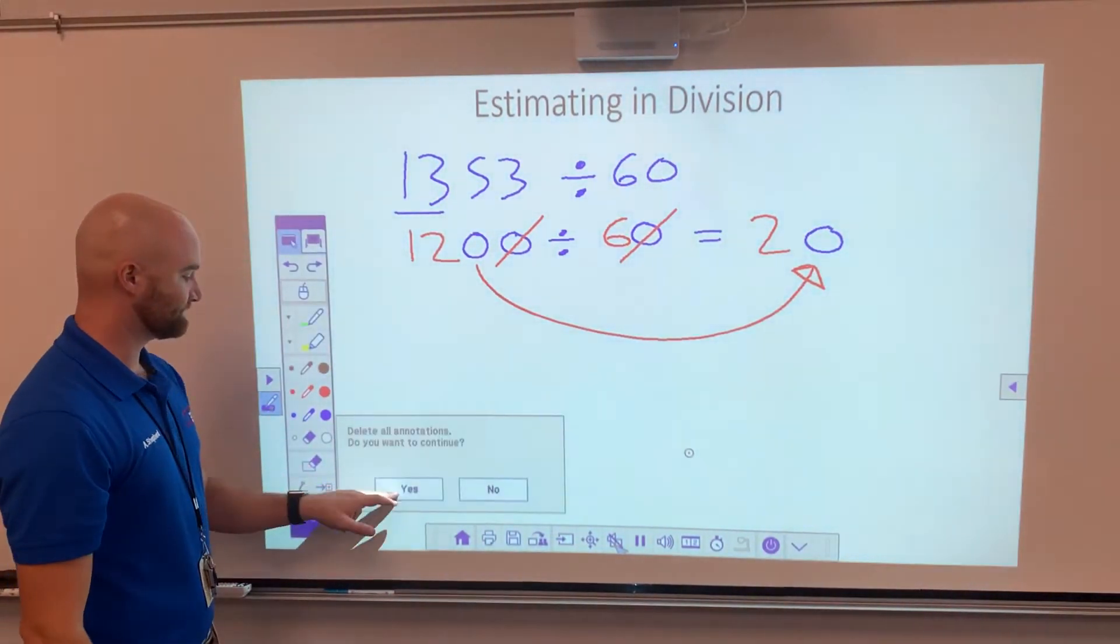This time I want you to try it. I've got 2365 divided by 58. So I want you to try estimating. Remember, your estimate may not be the exact same as mine, and that's okay. Go ahead and pause the video and try it now.